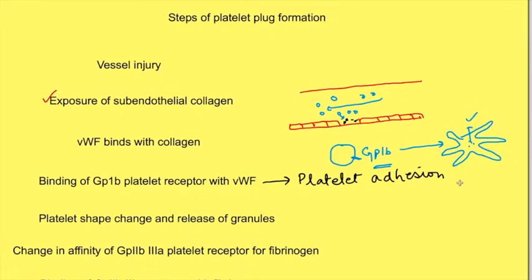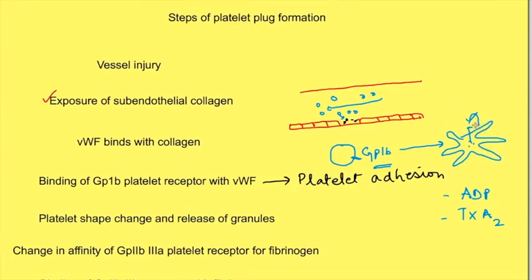The contents of the alpha and dense granules are released into the blood. These contents — ADP and thromboxane A2 — act on the platelets themselves. These platelets have receptors for ADP and thromboxane A2.